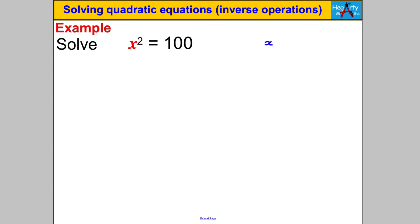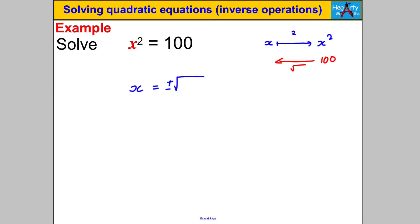Think about what happened to X: you took X, you squared it, and got 100. The opposite of squaring is square rooting. So if I take the square root of both sides, I get — and this is the key trick — positive or negative the square root of 100. So one answer is X = 10 and the other is X = −10.